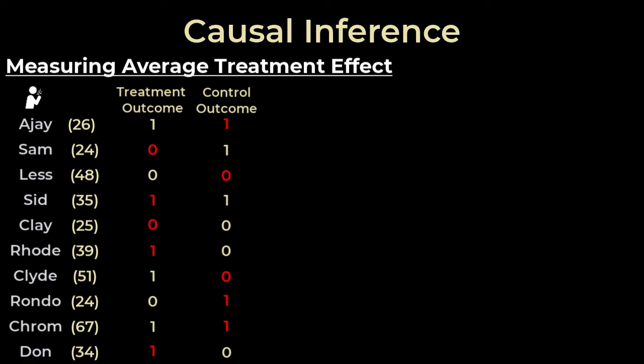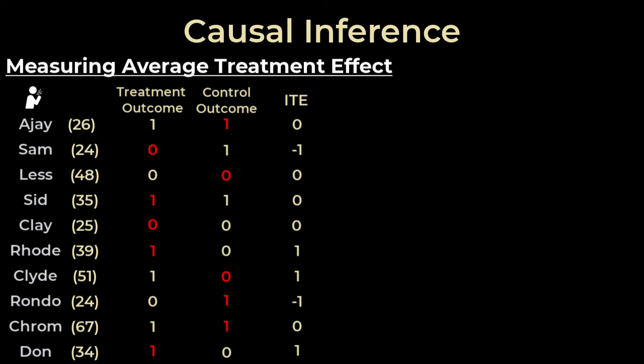To determine the average treatment effect, we subtract the case where the person got or would have gotten the treatment from the case where they had not gotten or would not have gotten the elixir treatment. This number is the individual treatment effect, and we calculate this for every single individual. We then take the average of the individual treatment effects to get the average treatment effect. This final value is +0.1, so it looks like the elixir does indeed help even when accounting for age.